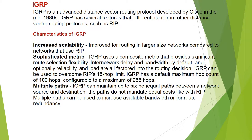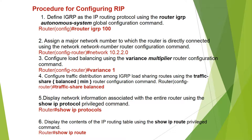Multiple paths can be used to increase available bandwidth for route redundancy. To configure IGRP: define IGRP as the IP routing protocol using the 'router igrp autonomous-system' global configuration command — Router(config)# router igrp 100. Assign a major network number to which the router is directly connected using the 'network' network-number router configuration command — Router(config-router)# network 10.2.2.0.